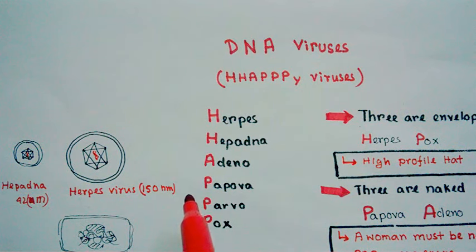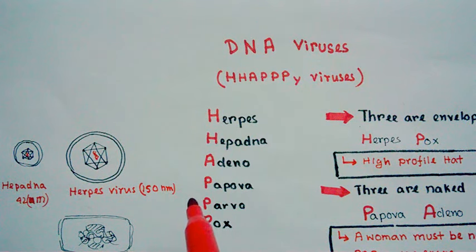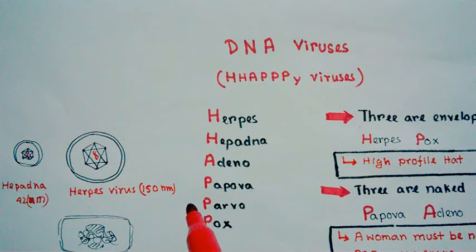For pox, the capsid symmetry is complex. For all other DNA viruses, the symmetry of the capsid is icosahedral. That covers everything about the DNA viruses — their structure and their names.